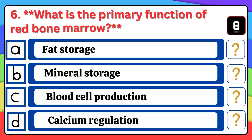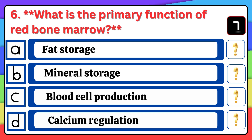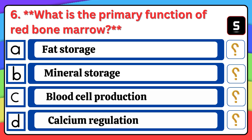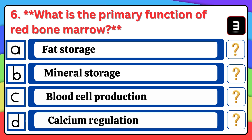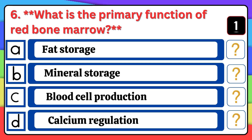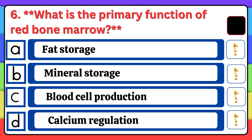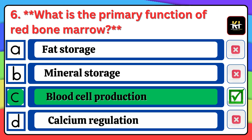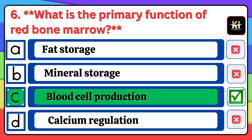Question number six: What is the primary function of red bone marrow? Correct answer: Option C — Blood cell production.